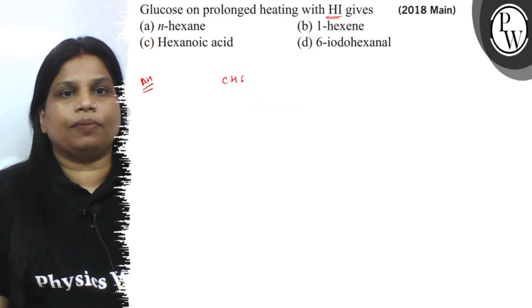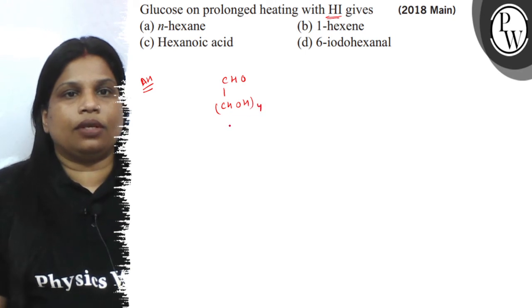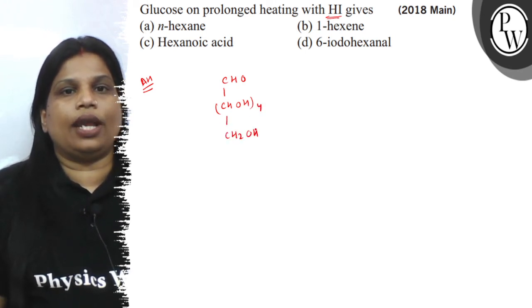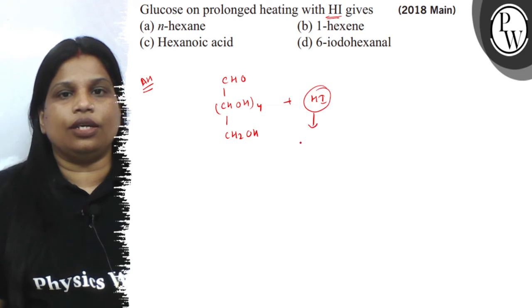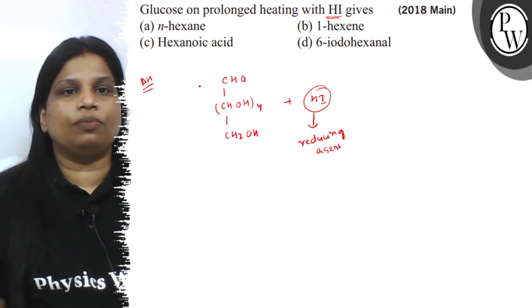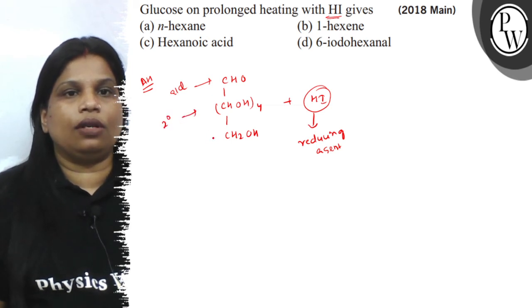Glucose, write down the structure of glucose where it's an aldehyde group, secondary alcohol and primary alcohol are present and it is treated with hydrogen iodide. And this is a reducing agent. So, this will reduce the aldehyde group and secondary alcohol and primary alcohol also.